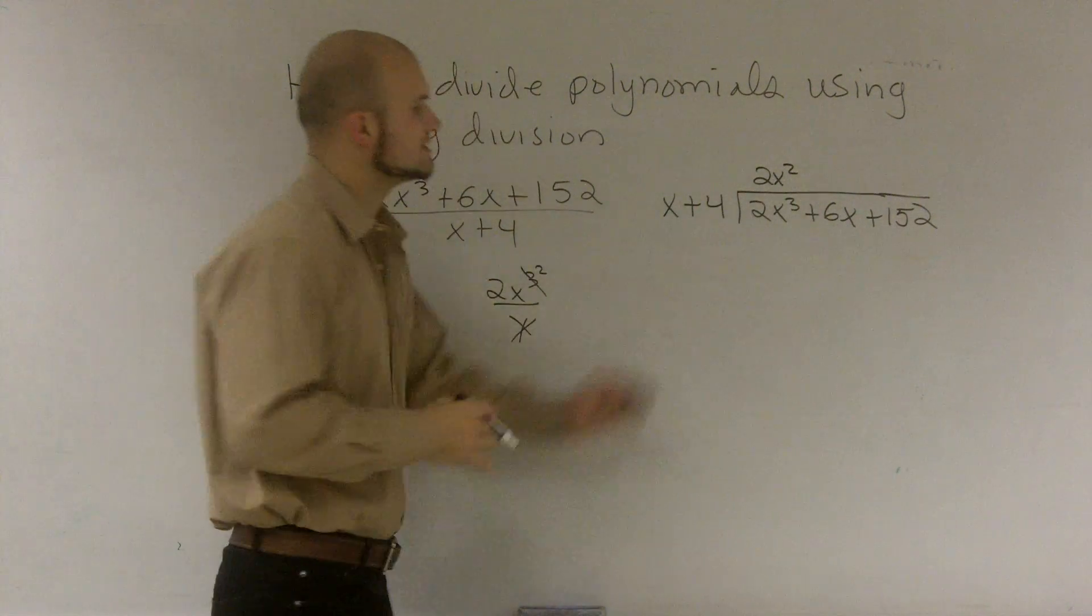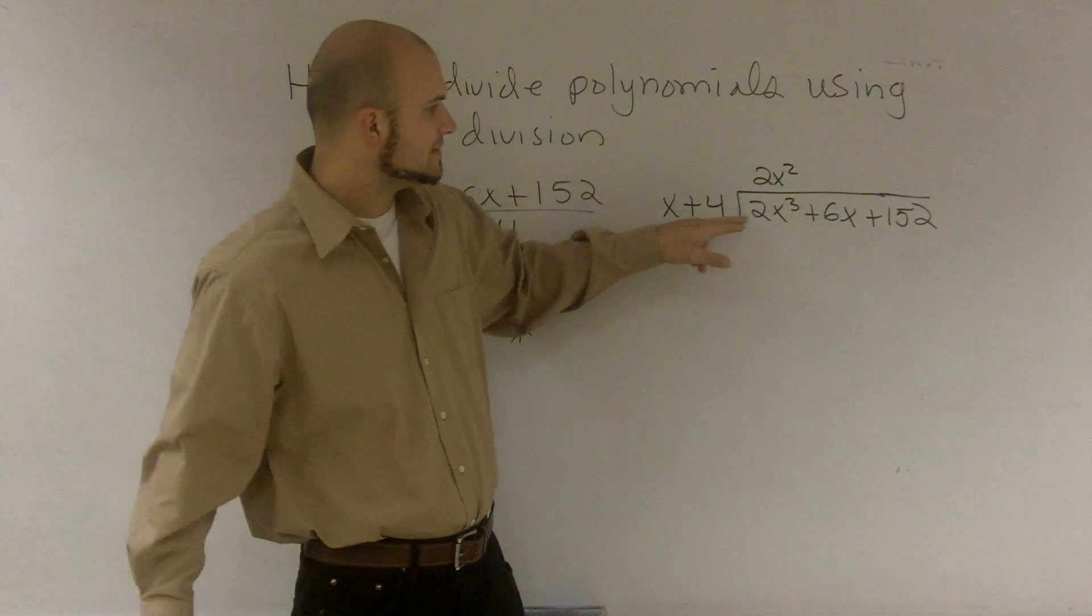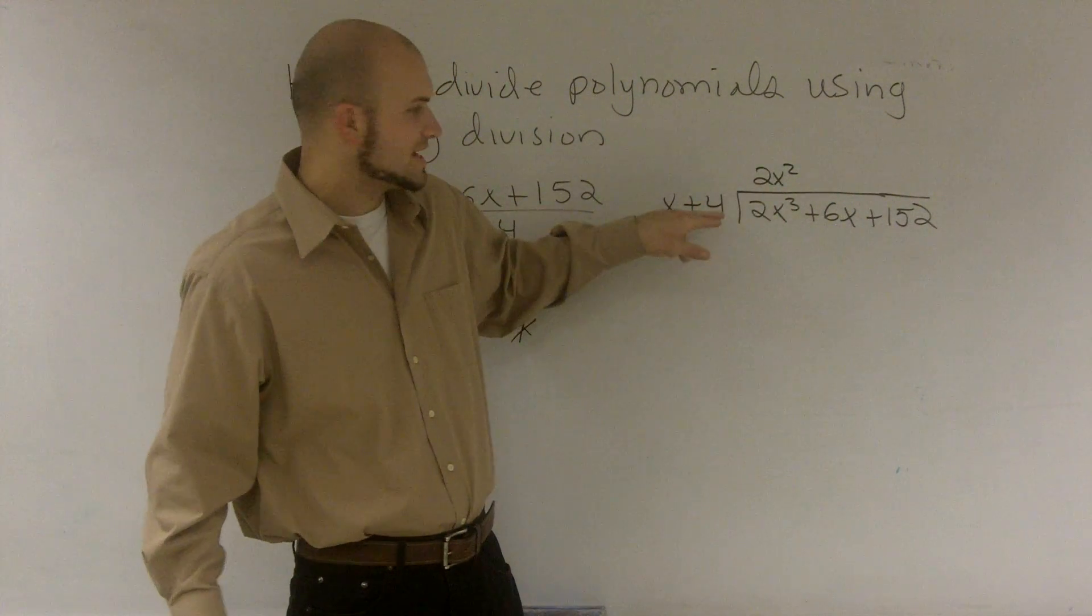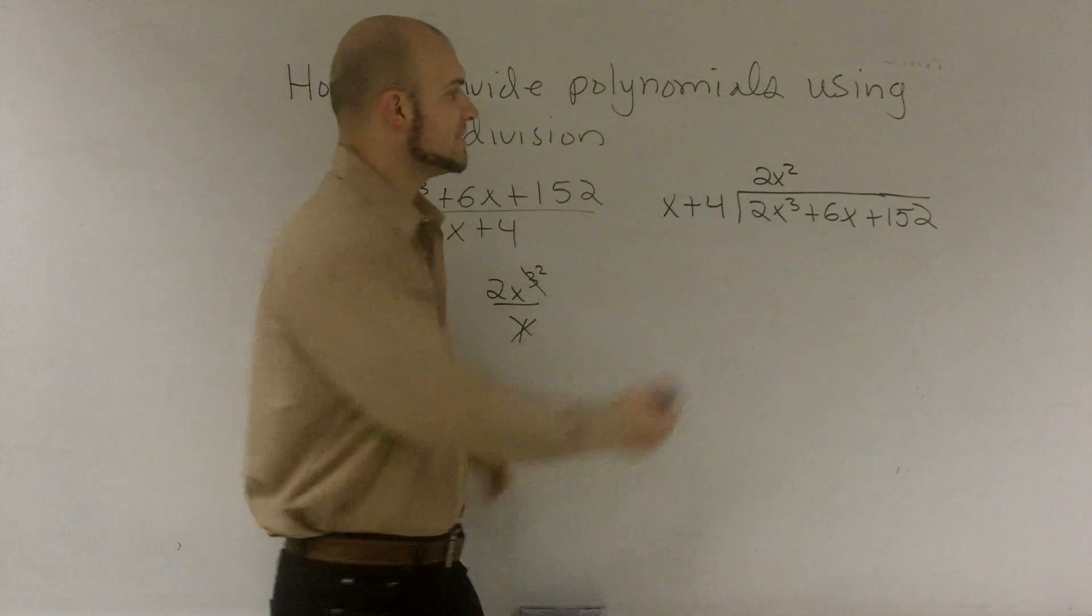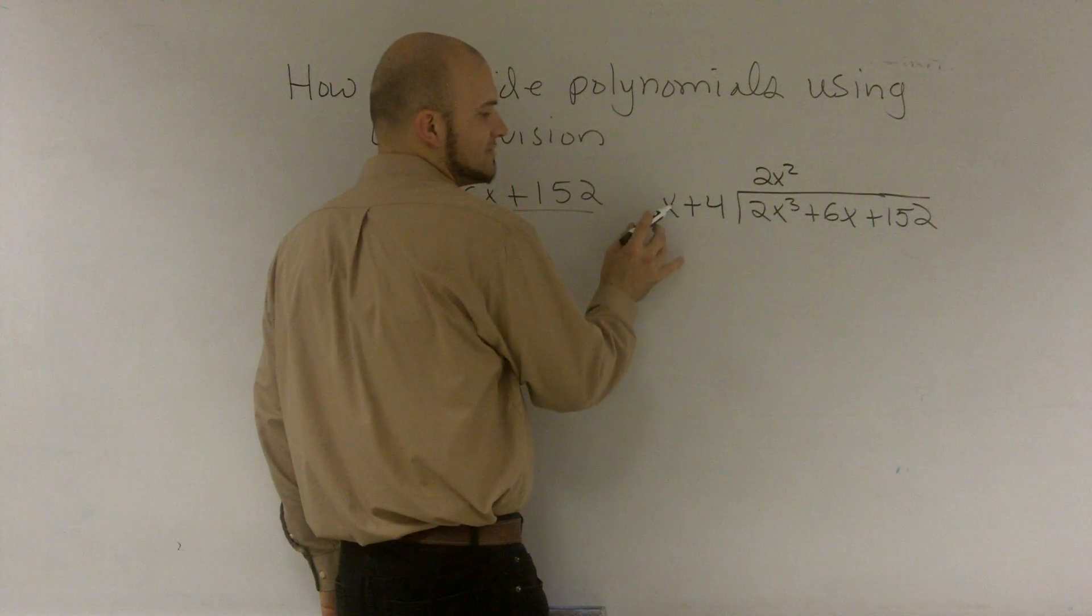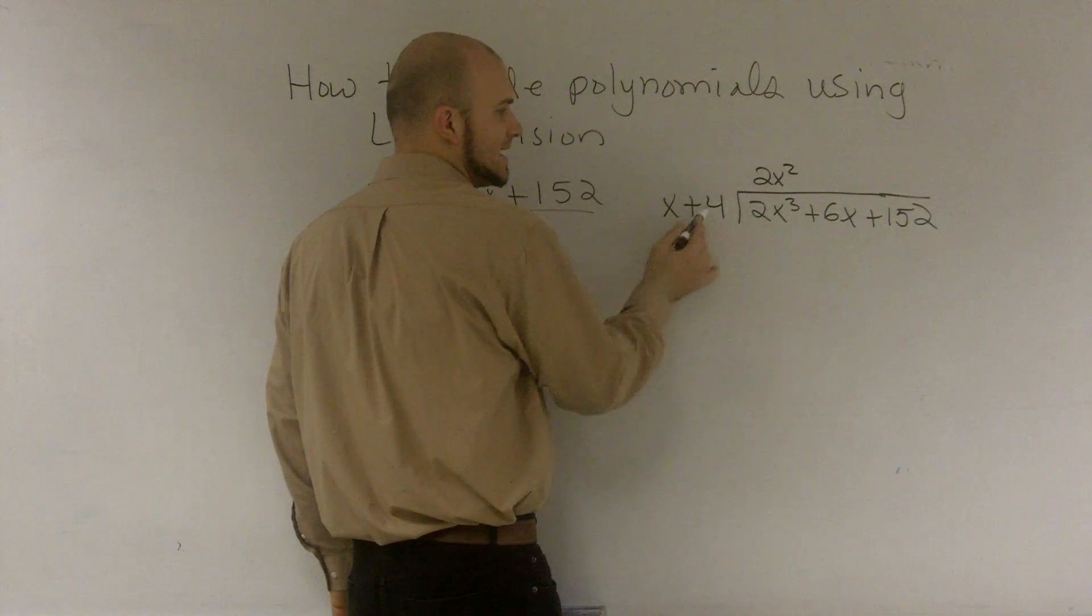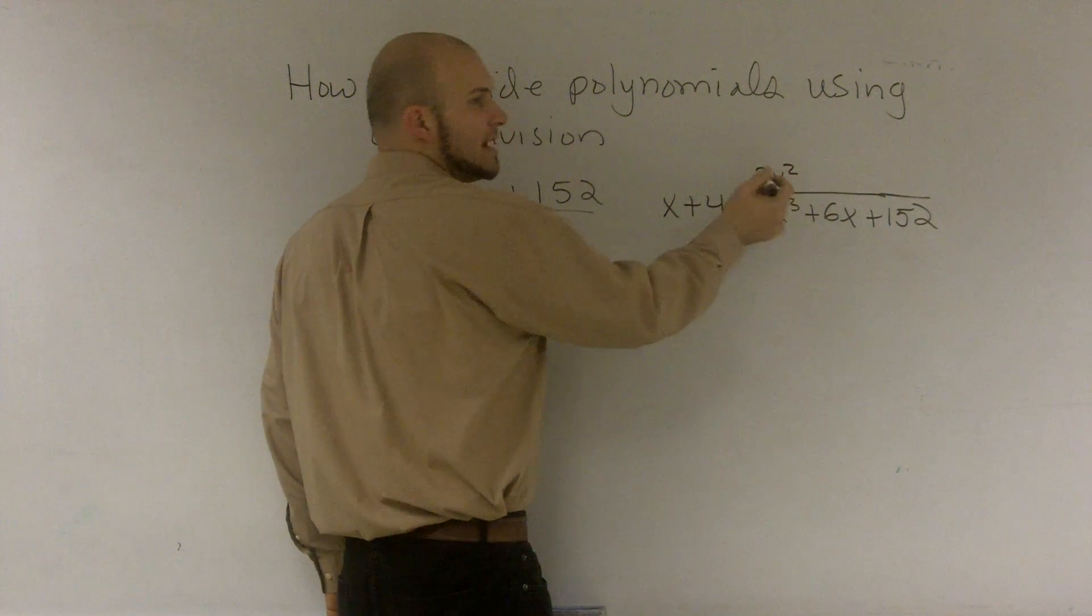So now what I have to do is I can't divide my 4 into my x because there's no x with a 4. And I can't go into any other term. So now the important thing is once I've divided my first term in, I can't divide my second term in. So now I'm going to have to multiply.